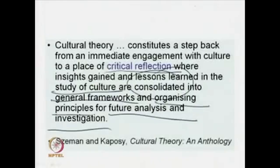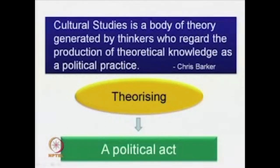This is a body of theory that has been generated by thinkers not simply for the sake of making theoretical formulations. There is another part to it, which has to do with position — where Barker says those 'who regard the production of theoretical knowledge as a political practice.' The theorizing therefore becomes a political act. Theorizing has, as we saw in the first two lectures, to do with revealing power structures. Talking about power is one of the fundamental jobs of cultural studies. In that sense, theorizing is not only making abstractions — theorizing is also a political act by which you show the structures of power as operating in society.